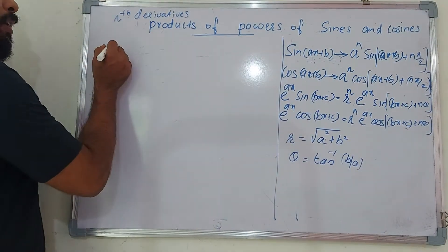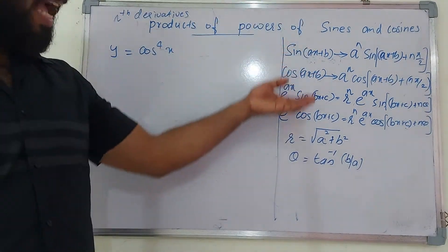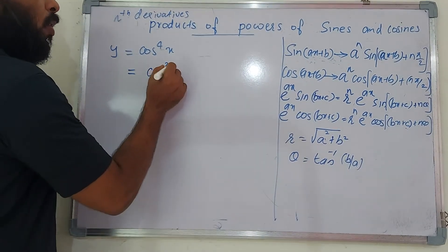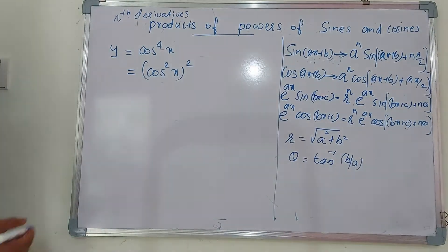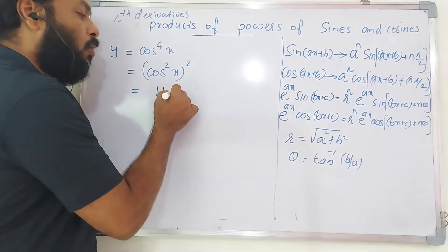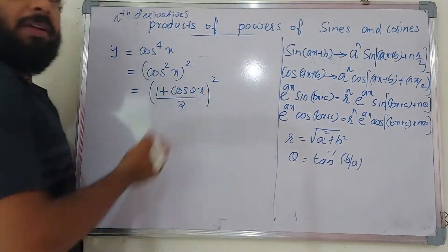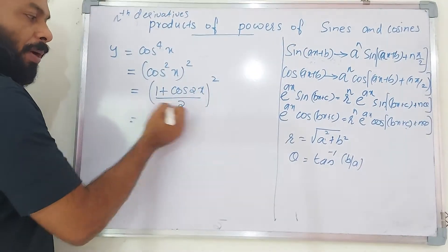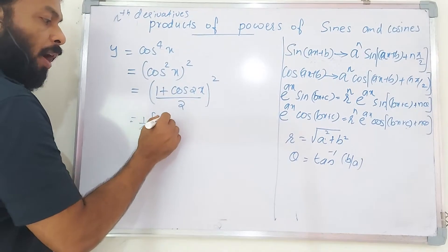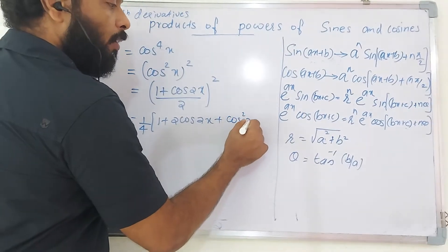Now let's apply these formulas. The first problem: find the nth derivative of y = cos⁴(x). We know cos²(x) = (1 + cos2x)/2, so cos⁴(x) = [(1 + cos2x)/2]² = (1/4)·(1 + cos2x)² = (1/4)·(1 + 2·cos2x + cos²2x).